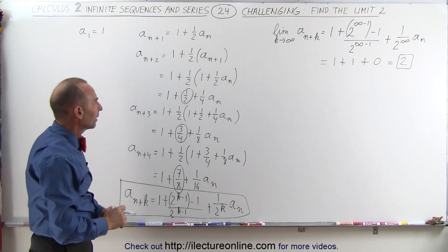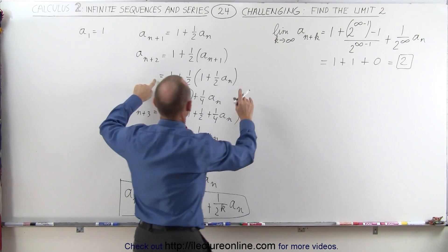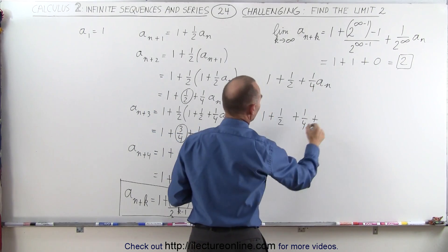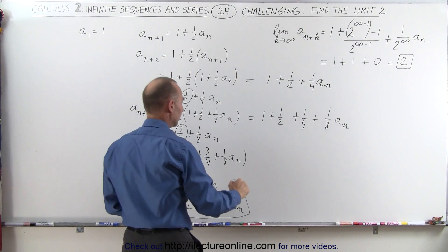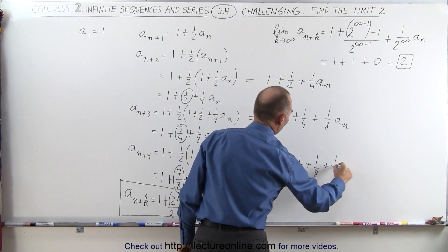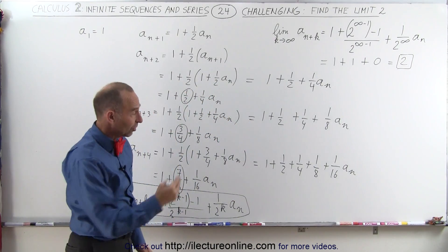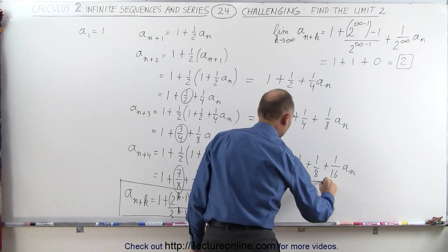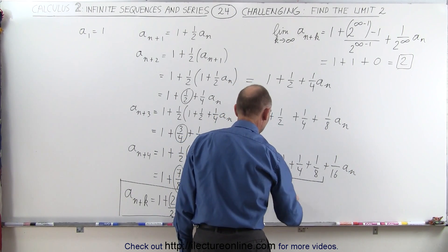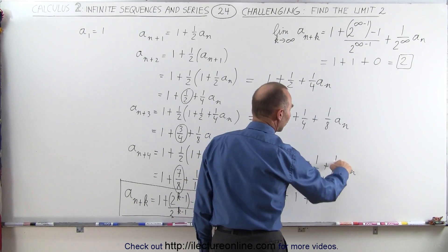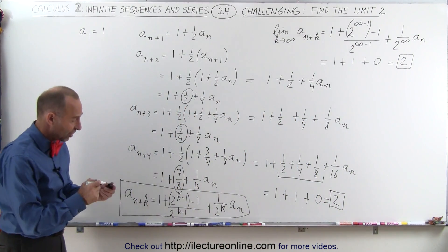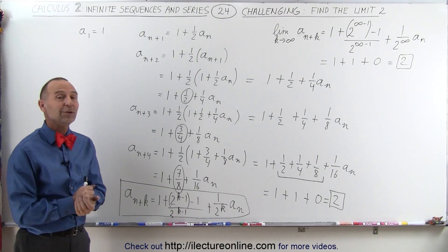There's another way we can look at this. We can write the sequence as 1 plus one-half plus one-quarter times a_n, then 1 plus one-half plus one-quarter plus one-eighth times a_n, and so forth. In the limit, the sum one-half plus one-quarter plus one-eighth plus one-sixteenth continuing to infinity adds up to 1. So this becomes 1 plus 1 plus 0, which equals 2 — another way of finding the limit of this sequence using a geometric series.